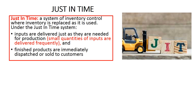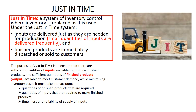The fourth and final materials management strategy is just-in-time. Just-in-time is a system of inventory control where inventory is replaced as it is used. Under just-in-time, inputs are delivered just as they are needed for production — meaning small quantities are delivered frequently — and finished products are immediately dispatched or sold to customers. Look down the left-hand side of your vocabulary sheets, find the term just-in-time, and write this definition. The purpose of just-in-time is to ensure sufficient inputs are available to produce finished products, and sufficient finished products are available to meet customer demand, while minimizing inventory costs.